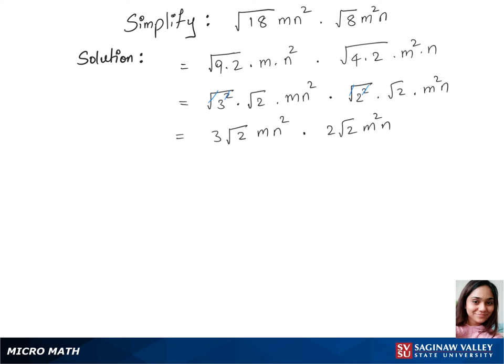Now let's multiply these and get 3 times 2 is 6, times root 2 times root 2 is square root of 2 squared, times m times m squared is m cubed, and same thing n squared times n is n cubed.